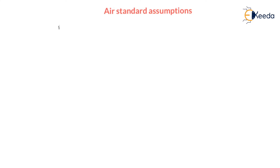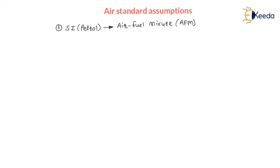First of all, if it is an SI engine — that is a petrol engine — petrol is used as working fluid. There will be an air-fuel mixture (AFM) taken in during the suction stroke. But the volume of air is very, very high as compared to the volume of fuel, hence we are assuming that air is the only working fluid.